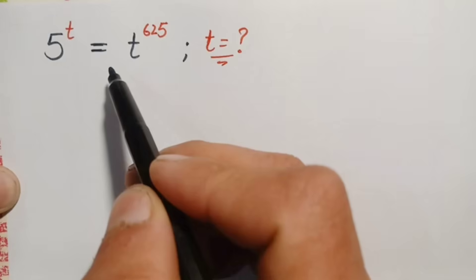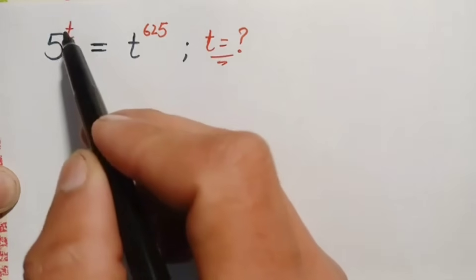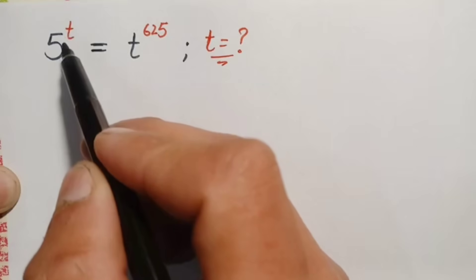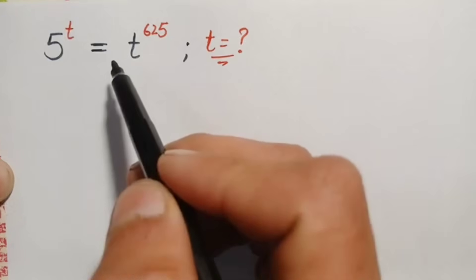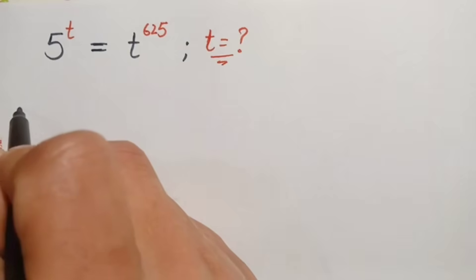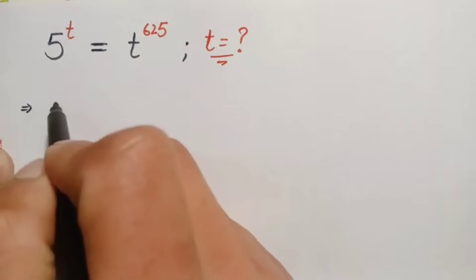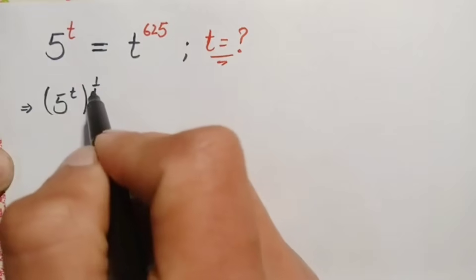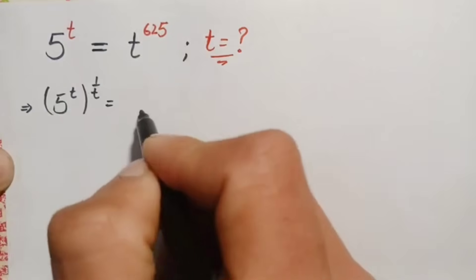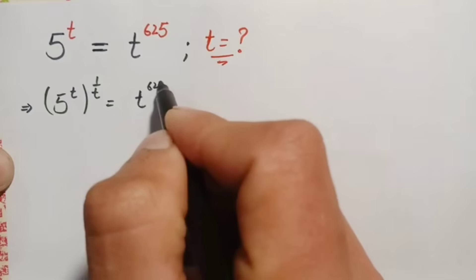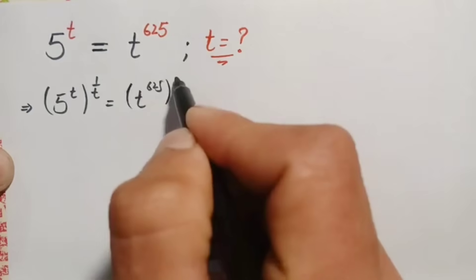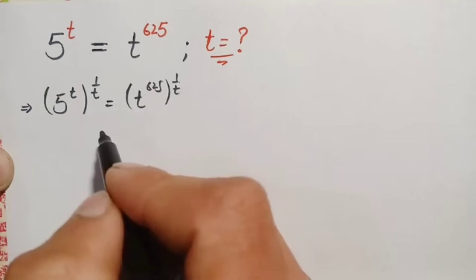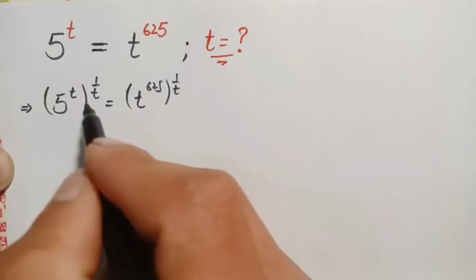First of all, we will try to eliminate the variable t from the exponent on the left-hand side. To eliminate t from the power, we will take 1 over t in the power on both sides. So we raise both sides to the power 1 by t: 5 raised to power t, whole raised to power 1 by t, is equal to t raised to power 625, whole raised to power 1 by t.